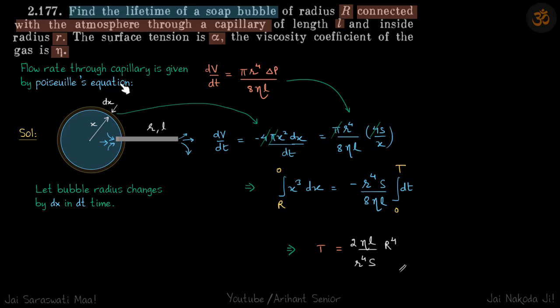For this problem we need to know Poiseuille's equation which relates volume flow rate with the radius and length of a capillary. So flow rate through a capillary of radius R and length L, suppose we have a pressure difference of delta P. So what will be the volume flow rate? That is given by this equation which is Pi R power 4 delta P by 8 Eta L.